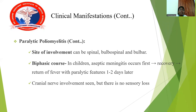Paralytic poliomyelitis can involve the spinal, bulbospinal, or bulbar regions. In the biphasic pattern seen in children, aseptic meningitis occurs first, followed by a recovery phase, then return of fever with paralytic features 1 to 2 days later. Cranial nerve involvement may occur, but there is no sensory loss in paralytic poliomyelitis.